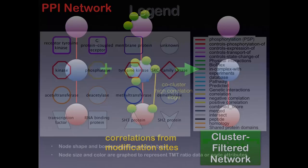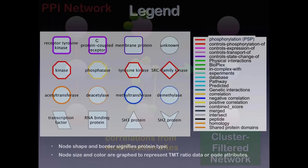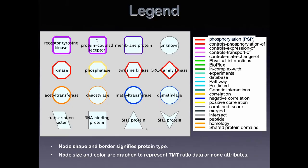To illustrate how cluster-filtered networks work: if we have a protein-protein interaction network where circles are proteins and red lines are protein-protein interactions from databases, we combine that with the co-cluster modification network. Two modifications that both correlate and co-cluster using TSNE are shown with a yellow edge. We then filter out edges that don't have co-clustering modifications — that's what we call the cluster-filtered network. Node shape and border signify protein type: receptor tyrosine kinases and membrane proteins use one shape; kinases and phosphatases are polygons with yellow borders for phosphatases and red for kinases.